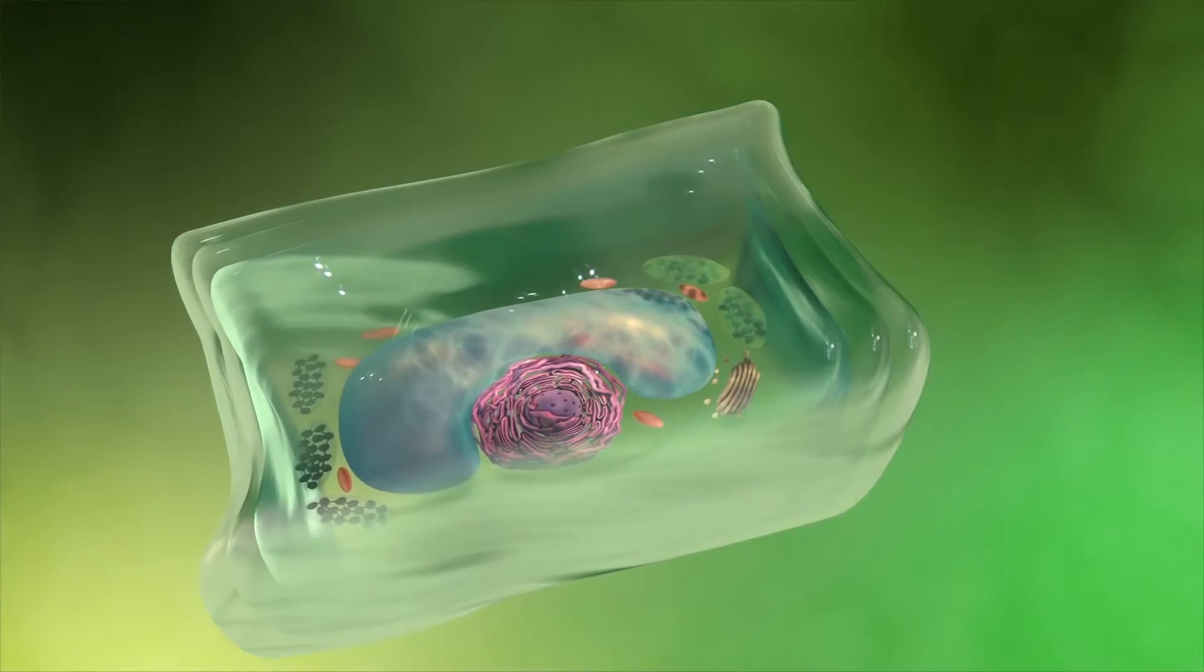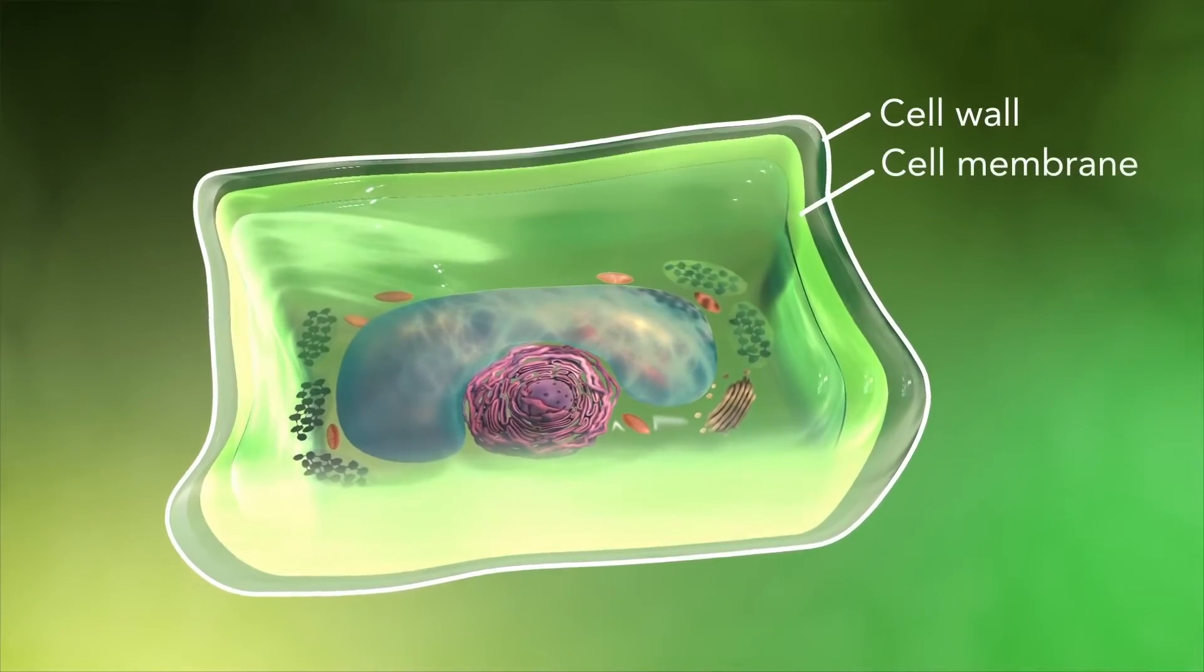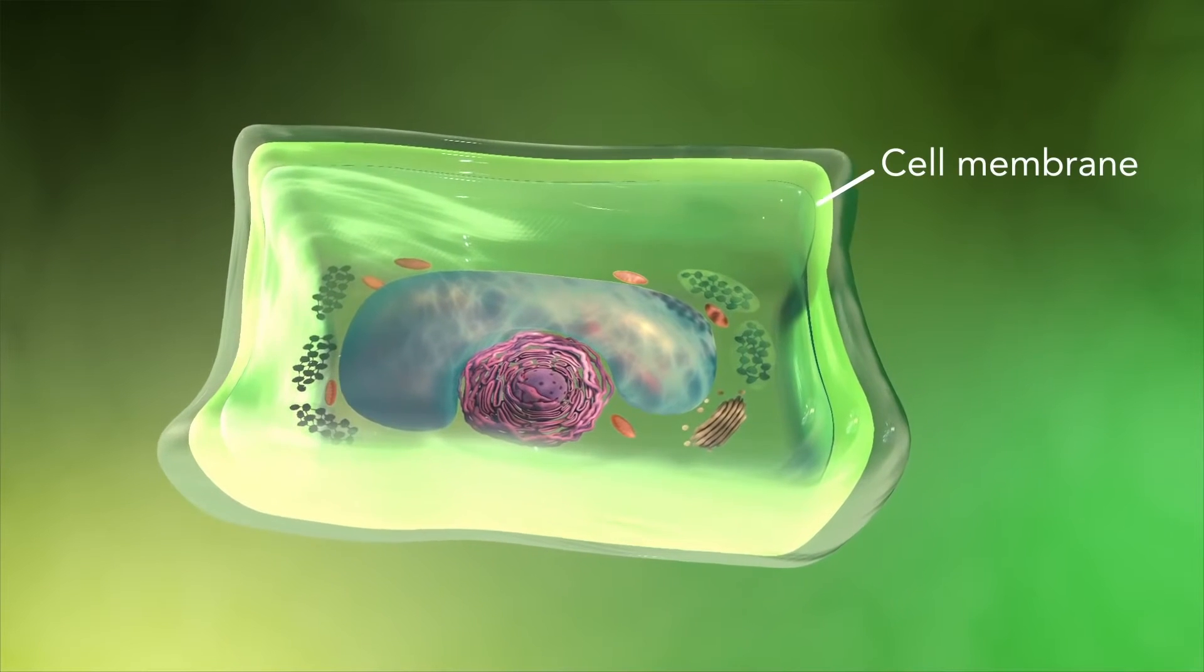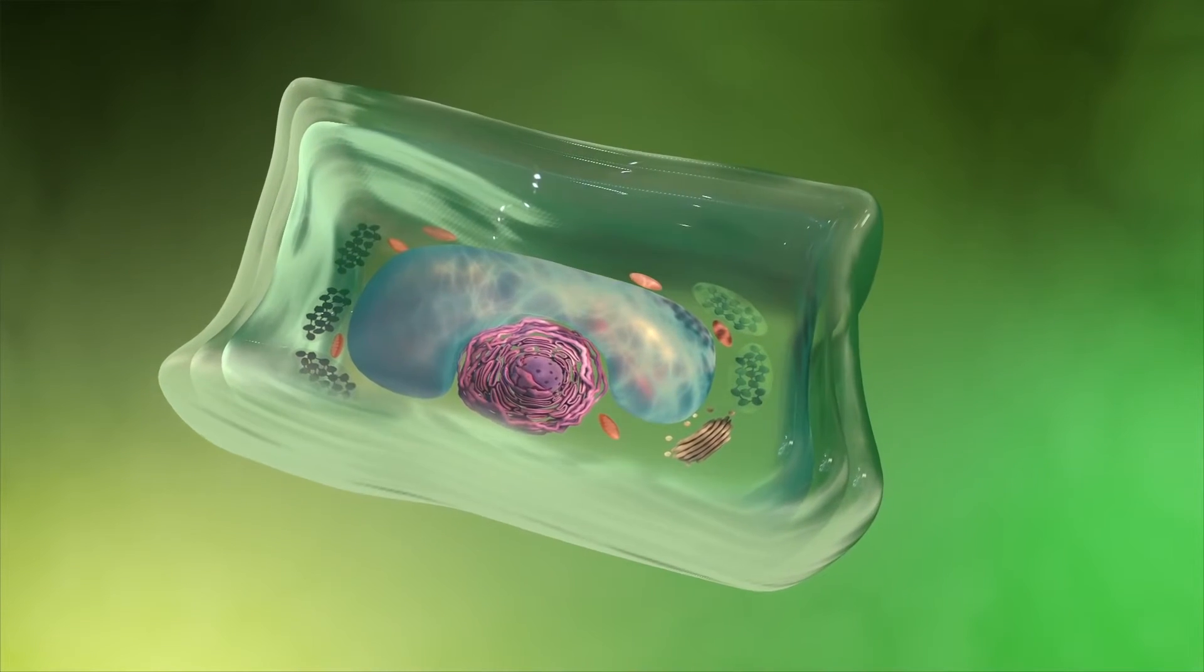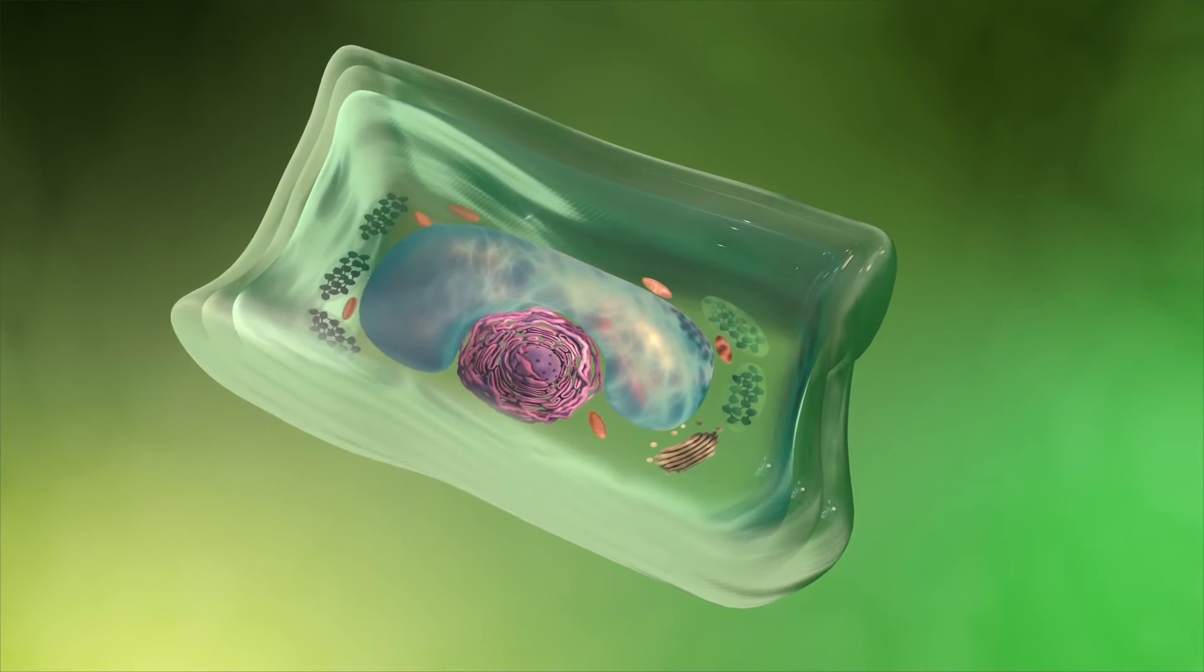Plant cells also have a cell wall outside of their cell membranes that shape, support, and protect the plant cell. Animal cells never have a cell wall.